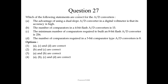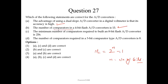Question number 27: which of the following statements are correct for analog-to-digital converters? The advantage of using a dual slope A/D converter in a digital voltmeter is that its accuracy is high — correct. The number of comparators in a 4-bit flash A/D converter is 15 (= 2^n − 1 = 2^4 − 1 = 15) — correct. For an 8-bit flash A/D converter it is not 256 but should be 255. The number of comparators in a 3-bit comparator-type A/D converter should be 7, not 8. So both C and D are wrong; only A and B are correct — we choose option 3.